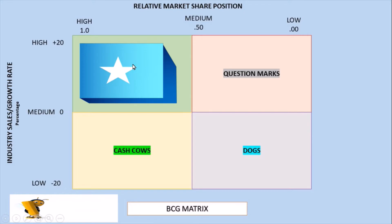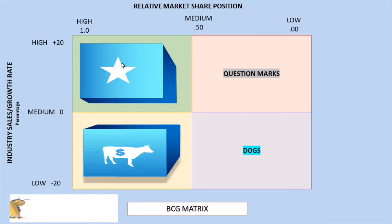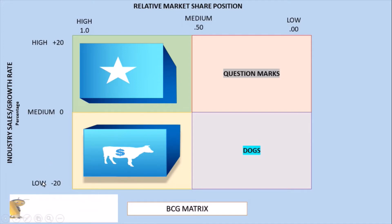The first component of the BCG matrix is STARS — strategic business units competing in high-growth industries with relatively high market share. These firms have long broad potential and should continue to receive substantial investment funding. The next component is CASH COWS — strategic business units with high market share in low-growth industries. These units have limited long-run potential but represent a source of current cash flow to fund investment in stars and question marks.